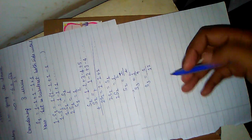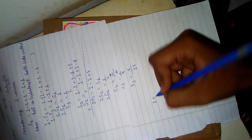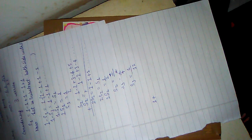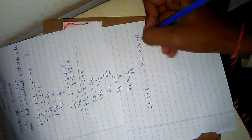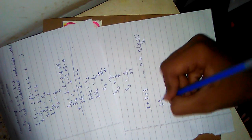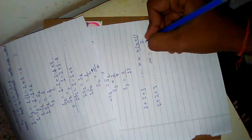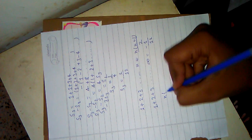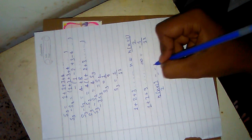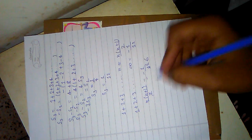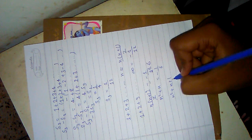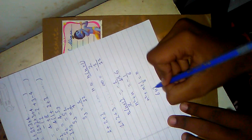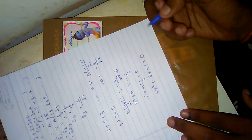Now as we know from what we have learned, one plus two plus three up to n equals n times n plus one by two. But when we take it to infinity, we are left with minus one by twelve. So n times n plus one by two equals minus one by twelve. This cancels the six, giving n squared plus n equals minus one by six, so six n squared plus six n plus one by six equals zero, and thus six n squared plus six n plus one equals zero.